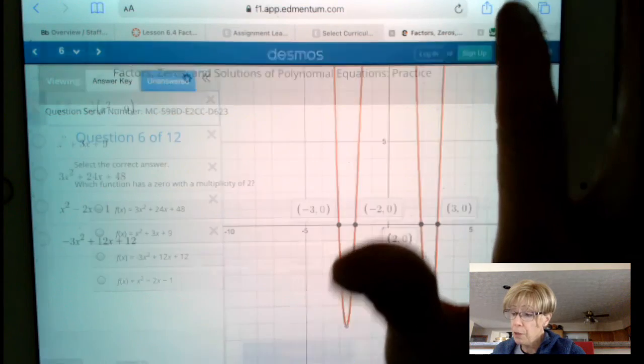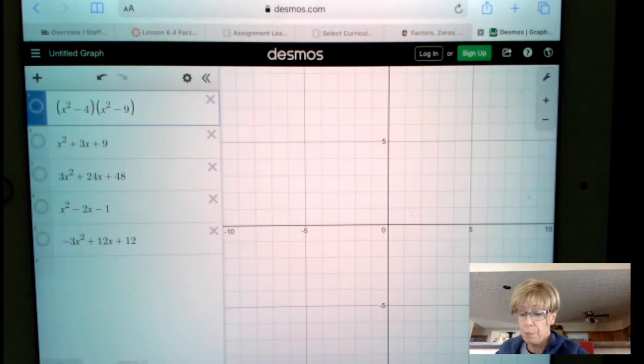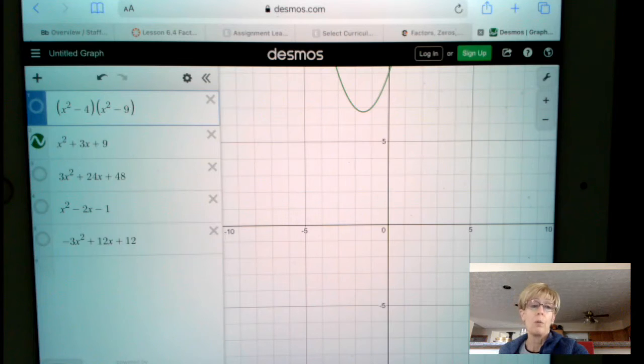But, as I flip over to Desmos here, we'll turn this one off. If we look at x squared plus 3x plus 9, well, we don't touch or cross the x-axis, so it's definitely not that one.